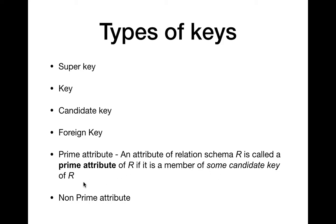A new term we require for normalization is prime attribute. An attribute of a relational schema R is called a prime attribute of R if it is a member of some candidate key of R. For example, in schema R with attributes A, B, C, D, E — if A and B together form the candidate key or primary key, then A and B are the prime attributes. If the candidate key consists of more than one attribute, each attribute is termed a prime attribute. All other attributes not part of the candidate key are termed non-prime attributes.